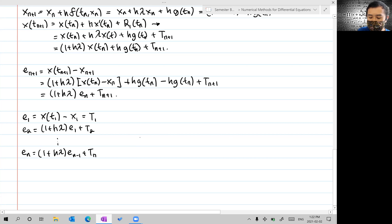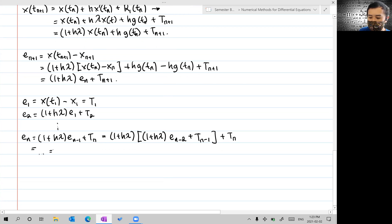We can obtain a formula like (1 + hλ)[(1 + hλ)e_{n-2} + τ_{n-1}] + τ_n. If we further expand it, the formula becomes τ_n + (1 + hλ)τ_{n-1} + (1 + hλ)²τ_{n-2} and so on, which arrives at (1 + hλ)^{n-1}τ_1.